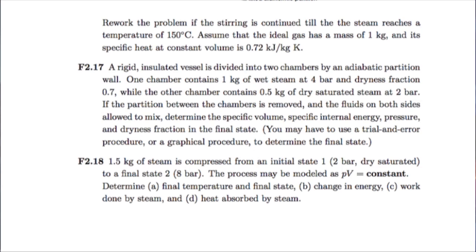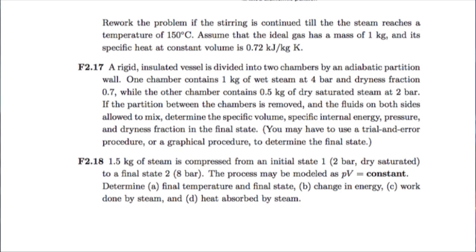F 2.17: We have a rigid insulated vessel divided into two chambers by an adiabatic partition wall. One chamber contains 1 kg of wet steam at 4 bar with some dryness fraction; the other contains 0.5 kg of dry saturated steam at 2 bar. If the partition is removed and the fluids mix, determine the specific volume, specific internal energy, pressure, and dryness fraction in the final state.